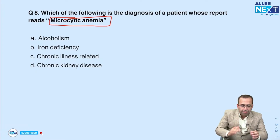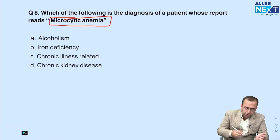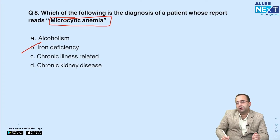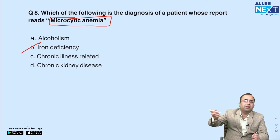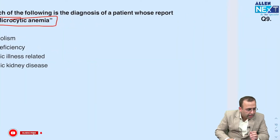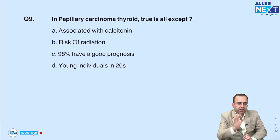Next question: which of the following is microcytic hypochromic anemia? The most common cause is iron deficiency anemia, followed by thalassemia minor. The answer is iron deficiency anemia.